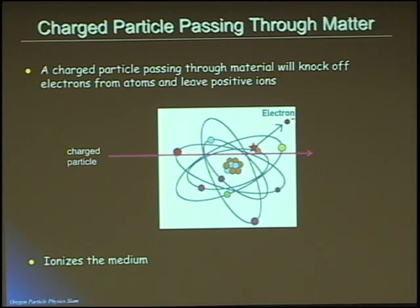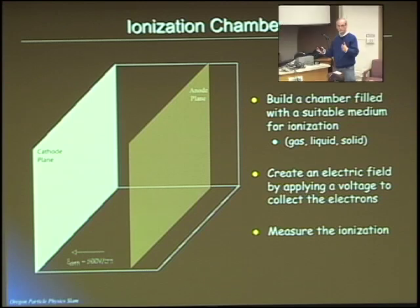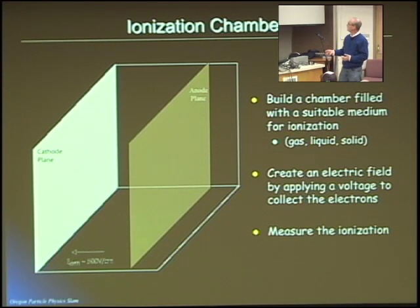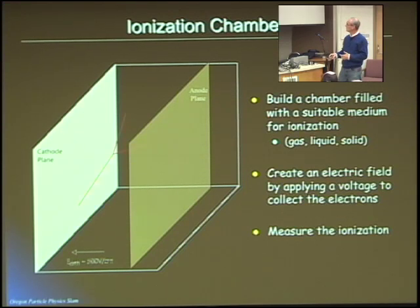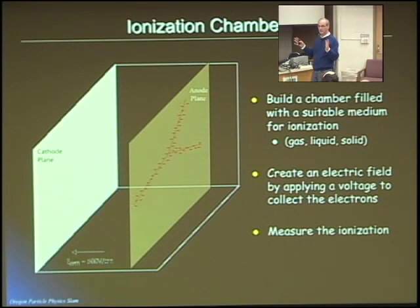So what you have to do is build a little chamber called an ionization chamber. You have a little chamber, fill it with a medium — it can be a gas, a liquid, or even a solid. Then you have two electrodes, a cathode plane and an anode plane. You put a high voltage across it, and when a particle goes through, it ionizes that medium. Because there is a voltage across the two electrodes, you start collecting that ionization. That is in principle everything that we do.